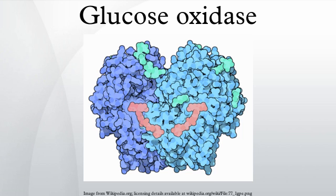Glucose oxidase is synthesized in several species of fungi and insects, where it is used to produce hydrogen peroxide, which in turn kills bacteria. Notatin, extracted from antibacterial cultures of Penicillium notatum, was originally named Penicillin-R,